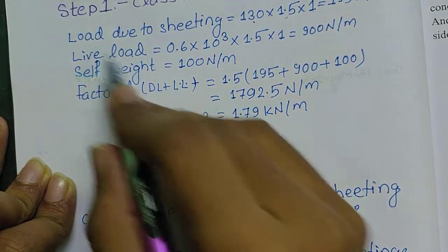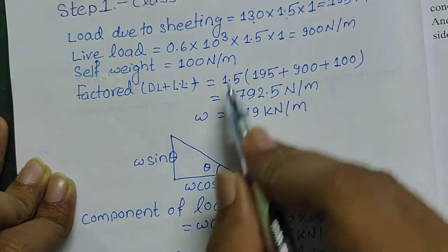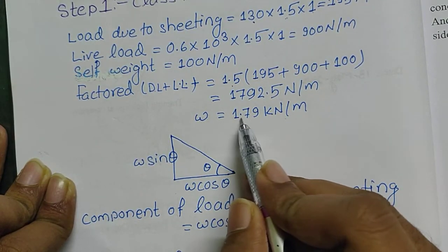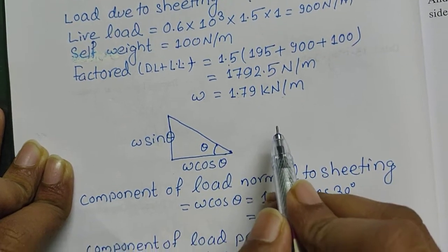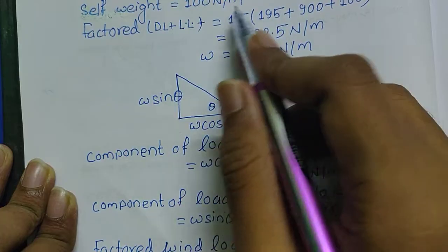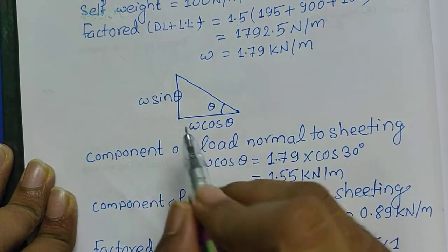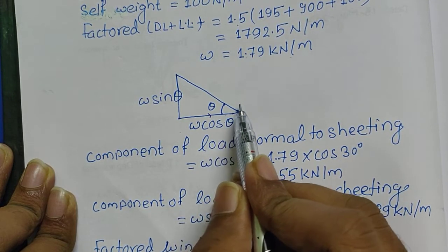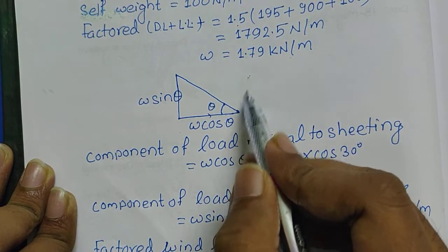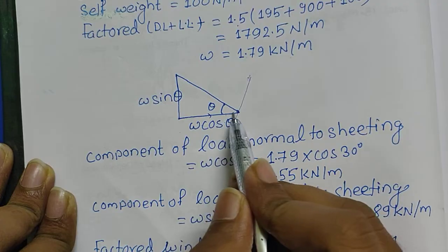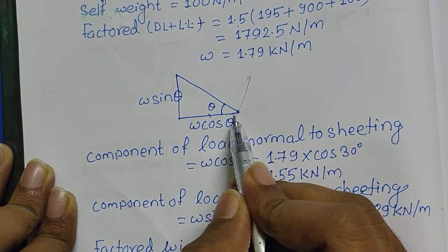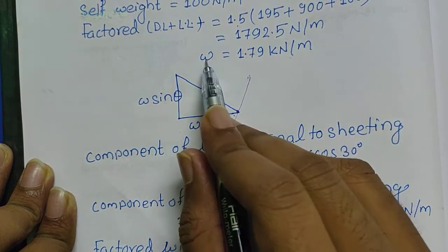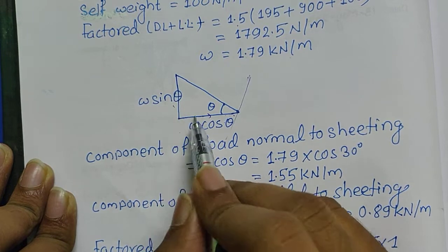Now I have calculated the factored dead load plus live load plus self-weight. I have taken factor 1.5 and all the loads are added, then our load becomes 1.79 kilo Newton per meter. Now this load is resolved in vertical and horizontal direction. This double cos theta is the load which is acting normal to the seating. If we consider that this is seating, then this load is normal to the seating.